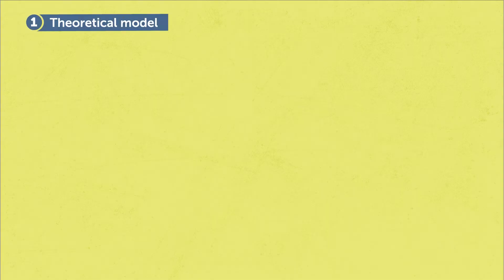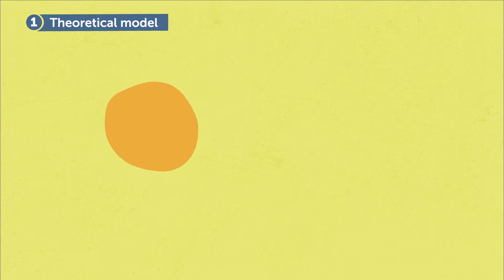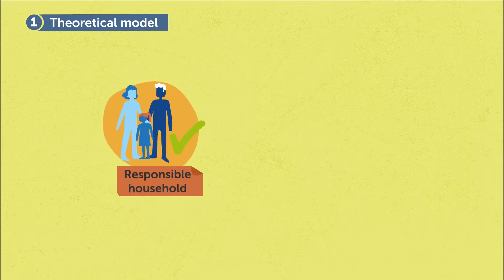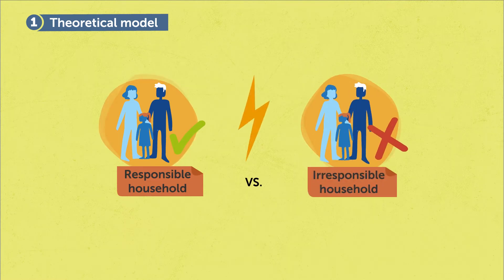We construct a theoretical model, which means it's a mathematical world that we build up. And in this model we have two kinds of players: the ones that care, we call responsible households, and the ones that don't care. Then we can make our mathematical calculations.